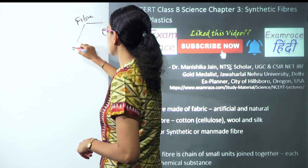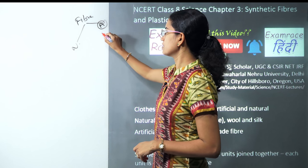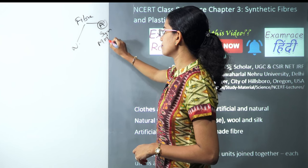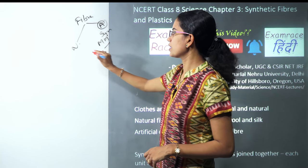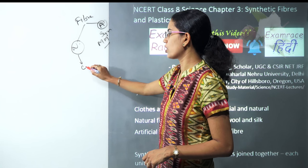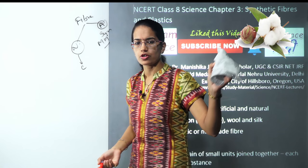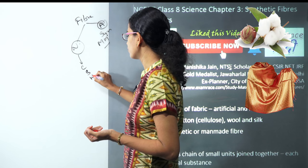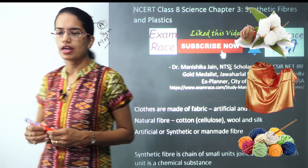Fiber can be natural fiber or artificial fiber. This artificial fiber is also known as synthetic fiber or manmade fiber. When it comes to natural fiber, we have cotton derived from cellulose, we have silk, and we have wool. So these three are considered as natural fibers.